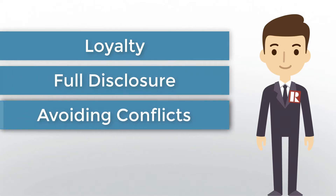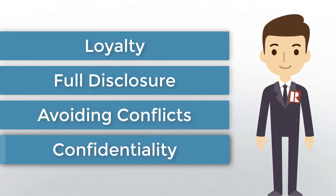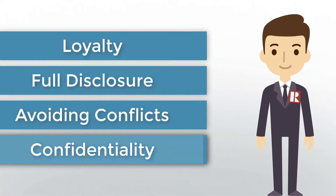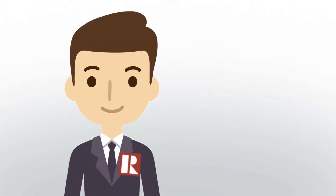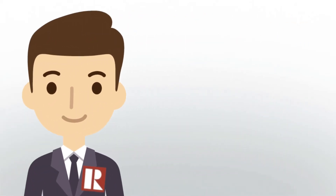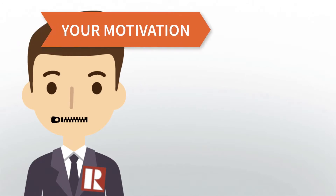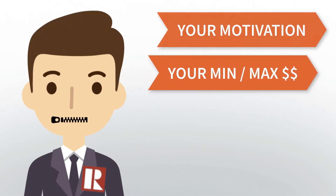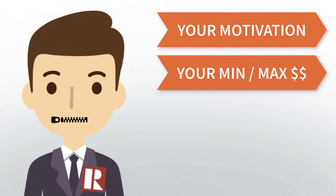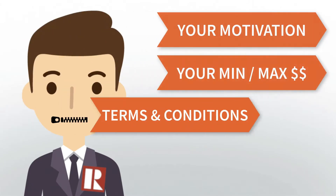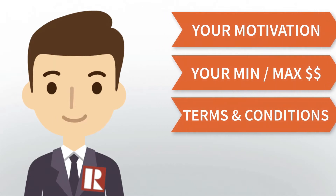Avoiding conflicts of interest: your agent must avoid any situations that would affect their duty to act in your best interests. Confidentiality: your agent must not reveal your private information without your permission, even after your relationship ends. That includes your reasons for buying or selling, your minimum or maximum price, and any preferred terms and conditions you may want to include in a contract.